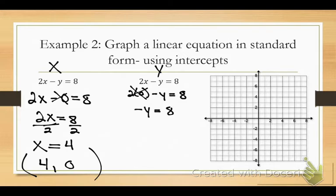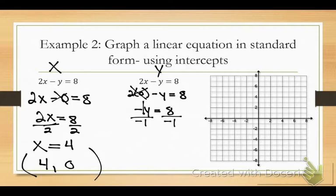Negative y equals 8 — but is that my answer? The problem is y is negative. There's an understood 1 in front of it, so I need to divide both sides by negative 1. Anytime you see those negative variables, you can't ignore that. Putting that understood one in front is really important. So y equals negative 8.